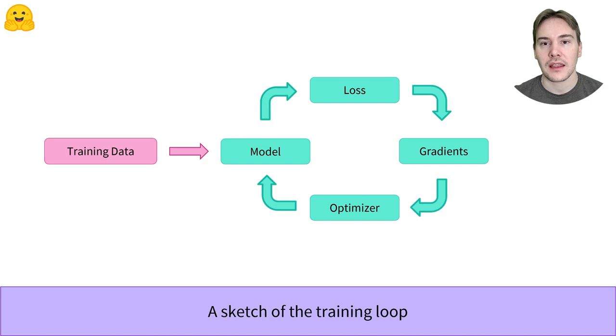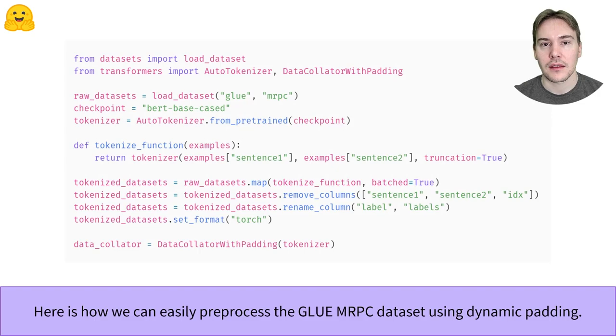Those gradients are then used by the optimizer to update the model weights and make them a little bit better. We then repeat the process with a new batch of training data. If any of this isn't clear, don't hesitate to take a refresher on your favorite deep learning course.